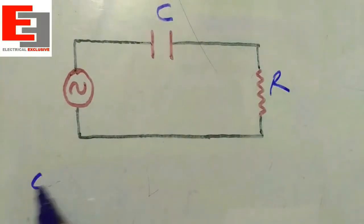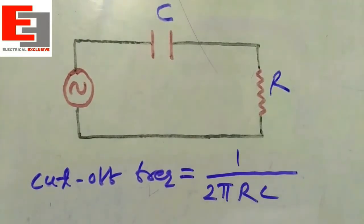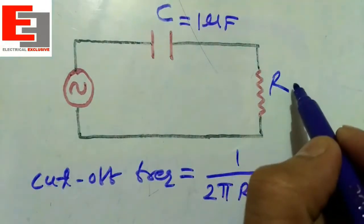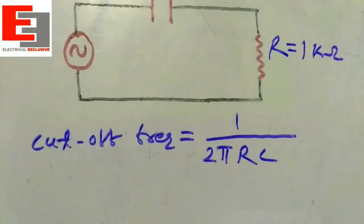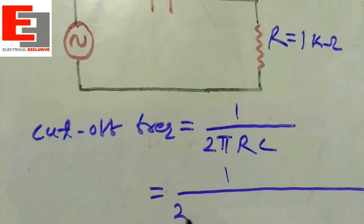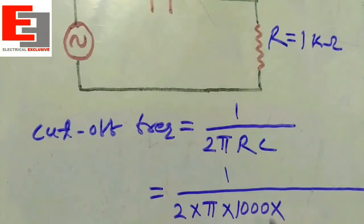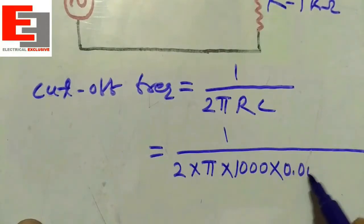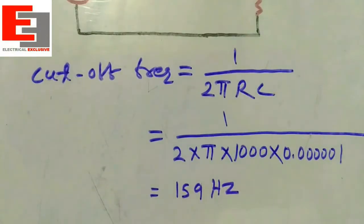The cutoff frequency is equal to 1 / (2πRC). Suppose this capacitor has capacitance 1 microfarad and this resistor has resistance 1 kilo ohm. Putting in the values: 1 / (2 × π × 1kΩ × 1μF) = 0.00001, which equals 159 hertz. So this is the cutoff frequency.